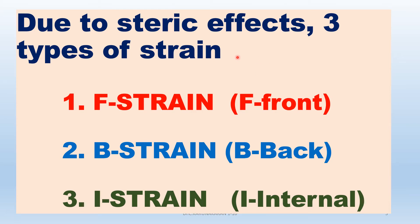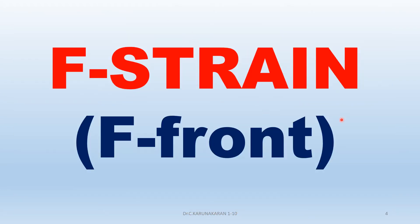For example, there are three types of strains: F-strain, B-strain, and I-strain. F-strain is front strain, B-strain is back strain, and I-strain is internal strain. F-strain and B-strain are very important. In this class, we will study F-strain in detail with an example.